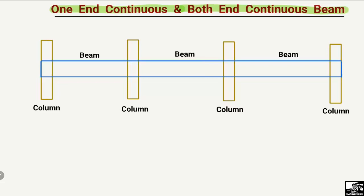I will explain with the help of a figure so it will be easier to understand. Let's consider this is a frame structure where it is composed of columns — the vertical members are the columns — and the horizontal members are the beams. There are three beams and four columns.